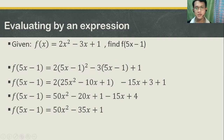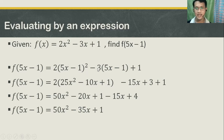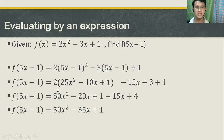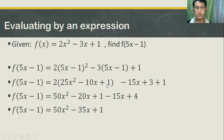And then distribute the negative 3. Negative 3 times 5x, you get negative 15x. Plus negative 3 times negative 1, that's plus 3, because negative times negative is positive. And lastly, copy plus 1. Then distribute the 2 to your 25x squared minus 10x plus 1. 2 times 25x squared, you get 50x squared. 2 times negative 10x, you get negative 20x. 2 times 1, you get positive 2.